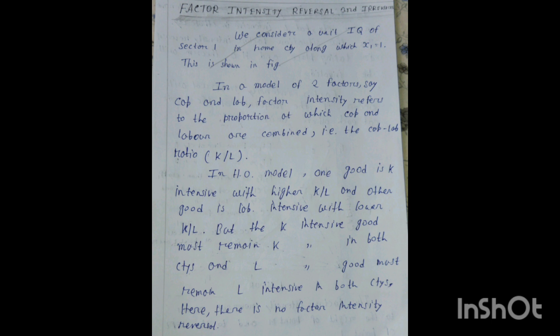But in a real world setting, it is observed that this theory doesn't hold. For example, steel is capital intensive in the USA — meaning the USA produces steel with much more capital being used. However, that same good, steel, is produced in India by using a huge amount of labor, making steel labor intensive in India. So the same good is capital intensive in one country but labor intensive in another — this is called factor intensity reversal.